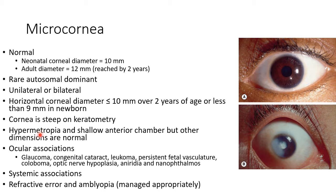It can be associated with hypermetropia and shallow anterior chamber, but other dimensions are normal. The ocular associations of microcornea include glaucoma, congenital cataract, and leucoma. This picture shows a case of microcornea with leucoma. Other ocular associations include persistent fetal vasculature, coloboma, optic nerve hypoplasia, aniridia, and nanophthalmos. There are various systemic associations of microcornea as well.